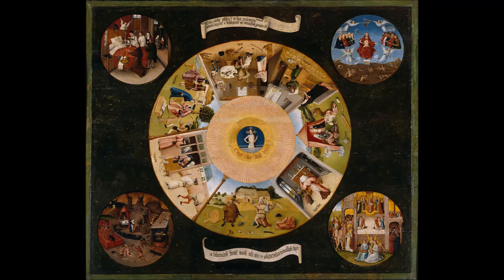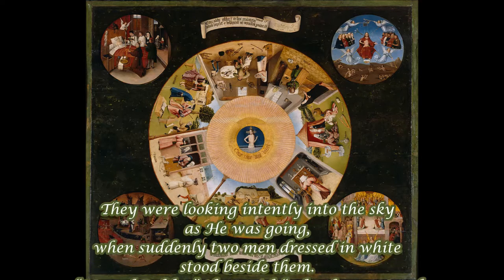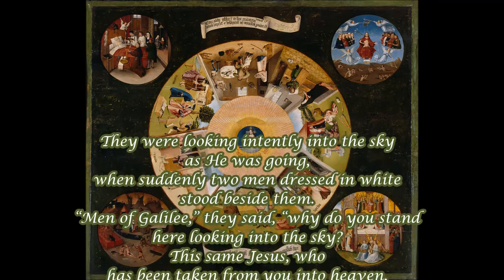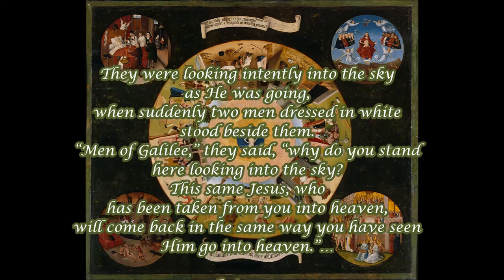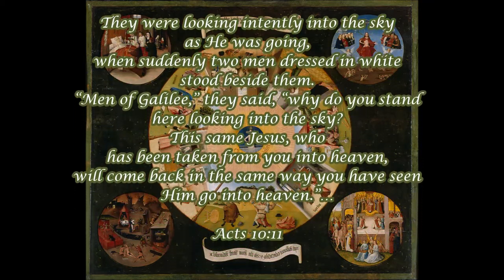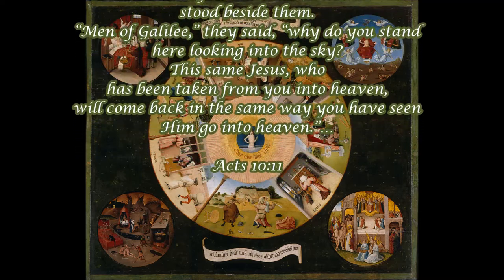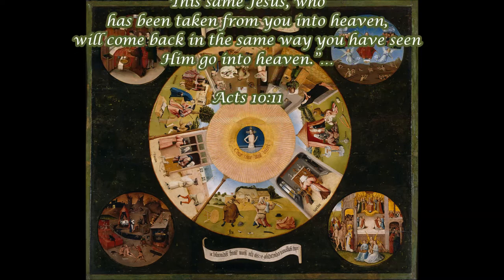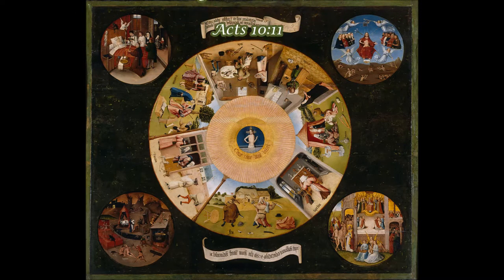We can tell from his symbols that Bosch used two further scriptures to guide his understanding. The first is from the book of Acts describing Jesus' ascension into heaven: 'Men of Galilee, they said, why do you stand here looking into the sky? This same Jesus, who has been taken from you into heaven, will come back in the same way you have seen him go into heaven.' And what we're looking at here is the Seven Deadly Sins and Four Last Things by Hieronymus Bosch — notice that the resurrected Jesus, painted in the very center, is a wound-bearing Jesus.